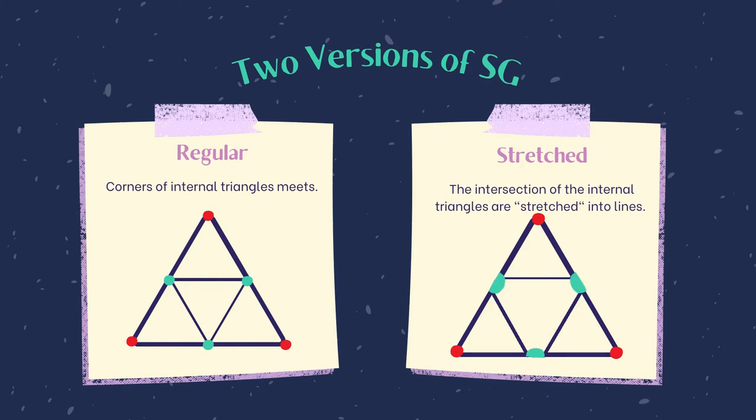There are two current versions of the Sierpinski Gasket. We have a regular version where the corners of internal triangles meet, and we have a stretched version where the intersections of the internal triangles are stretched into lines.